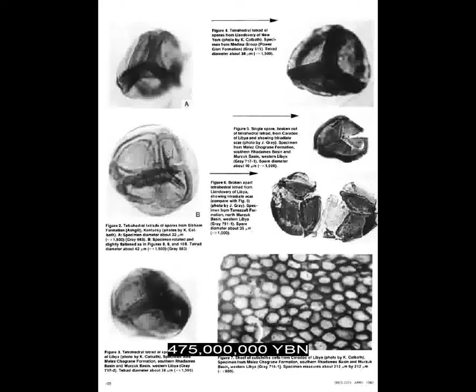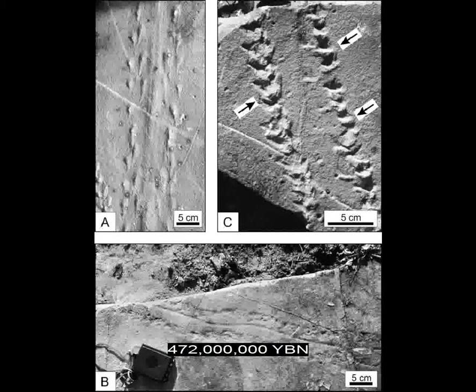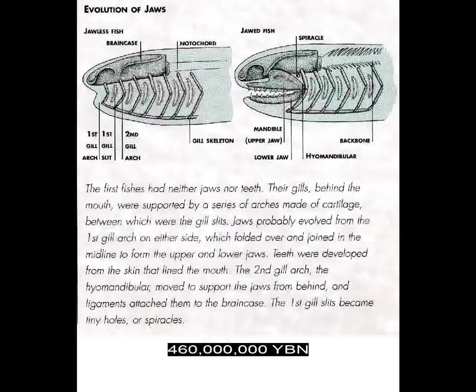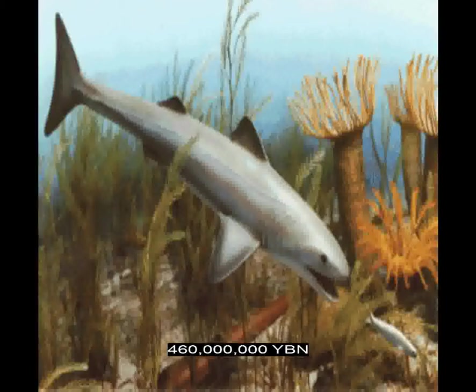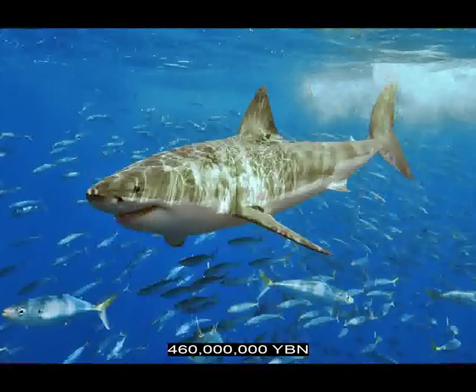The first animals live on land — arthropods myriapoda: centipedes and millipedes. Jawed vertebrates evolve — Gnathostomata: this large group includes all jawed fish, amphibians, reptiles, mammals, and birds. First vertebrate teeth. The earliest jawed vertebrates have no bone; their skeleton is made of cartilage. Jawed fishes Chondrichthyes — cartilaginous fishes, ancestor of all sharks, rays, skates, and sawfishes. Earliest fungi on land — ancestor of all terrestrial fungi. Fungi Glomeromycota — arbuscular mycorrhizal fungi.